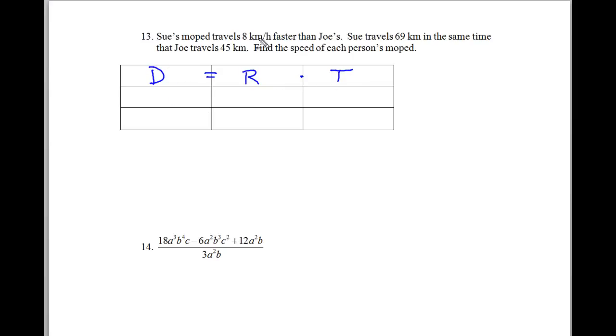And we're going to start off with this problem from Sue. Sue's moped travels 8 kilometers per hour faster than Joe's. Sue travels 69 kilometers in the same time Joe travels 45. Find the speed of each person's moped. So the previous problem dealt with going up and down the river. This is dealing with two different people and their mopeds.